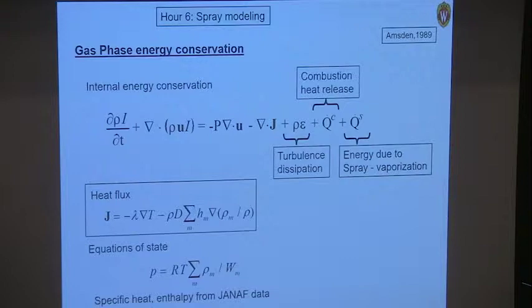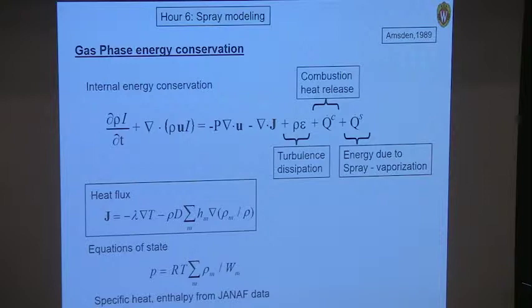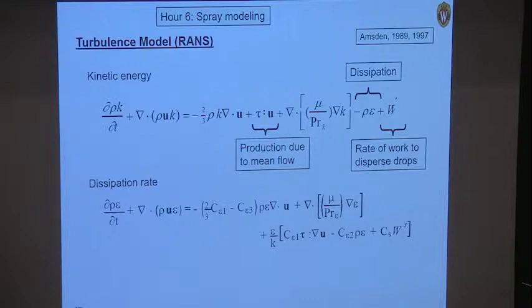Looking at the energy equation, the new contribution from the spray is energy associated with vaporizing droplets — either depletion as they steal energy from the gas to vaporize, or if they condense, they give energy back to the gas. We've discussed combustion and turbulence terms earlier; this last term is the one due to the spray. Other terms involve heat flux from thermal gradients and enthalpy transport due to species.